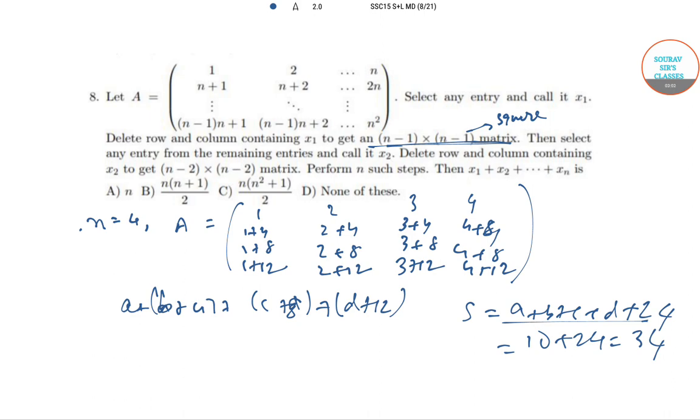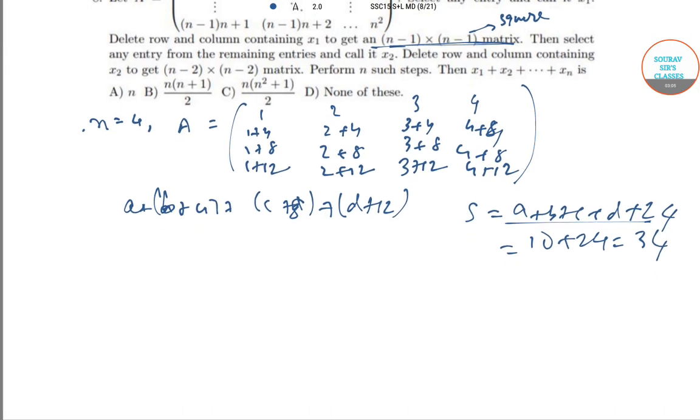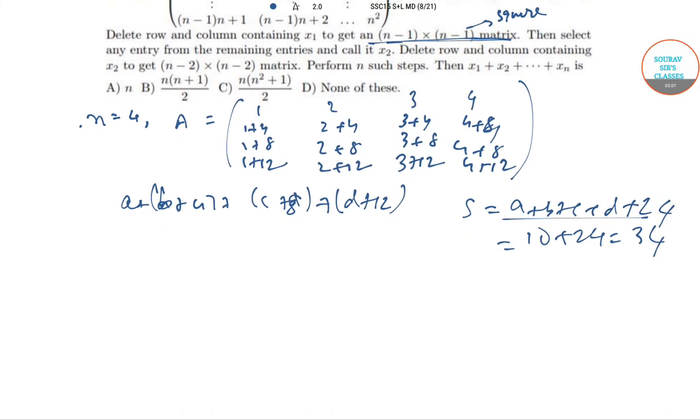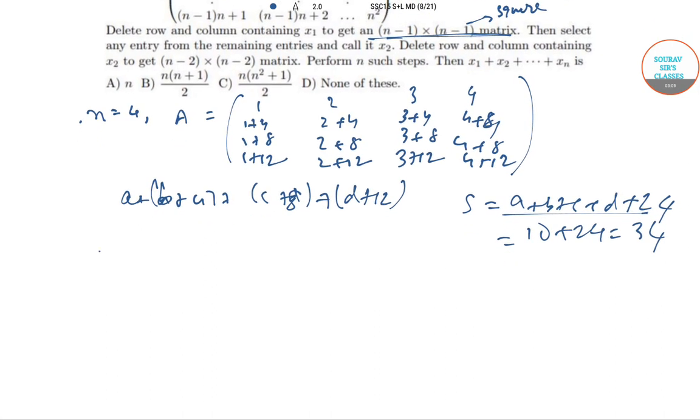S is the same for all choices of x₁ to xₙ. Hence, taking xᵢ as the main diagonal elements, we can rewrite the structure as 1×n + 2×(2n) + 3×(3n) + ... + (n-1)×n + n².